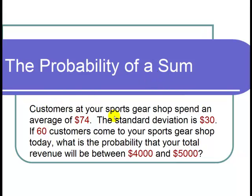Customers at your sports gear shop spend an average of $74. The standard deviation is $30. If 60 customers come to your sports gear shop today, what is the probability that your total revenue will be between $4,000 and $5,000?